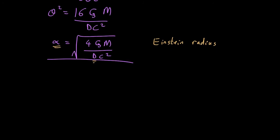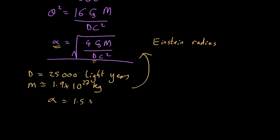So, what is this number? Let's assume we've got a Jupiter massed planet halfway to the middle of our galaxy. In that case d is about 25,000 light years. m is the mass of Jupiter, which is about 1.9 by 10 to the 27 kilograms. Stick this into here and you end up with alpha equals 1.5 by 10 to the minus 10 radians.